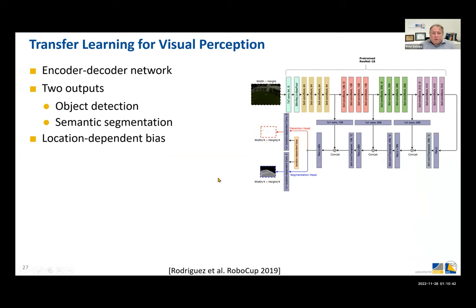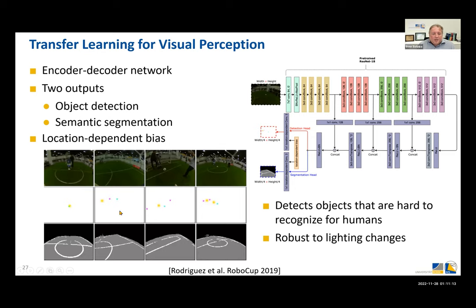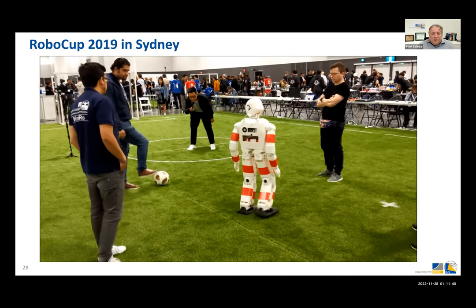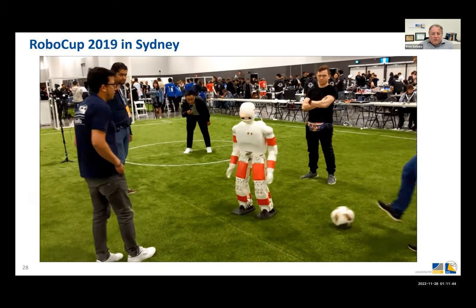For visual perception of the game situation we developed deep learning-based methods using a U-Net structure executed on the onboard GPU. In the chest of the robot there is a strong onboard computer with an Intel quad-core CPU and an NVIDIA GPU. We have two outputs: one for object detection like the ball, goalposts, or other robots, and one for semantic segmentation to find the field and field lines and distinguish them from the background. These methods are quite robust and can detect objects that are hard to recognize even for humans, tolerating different lighting conditions.